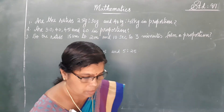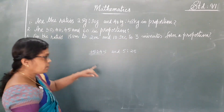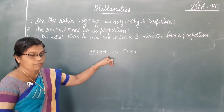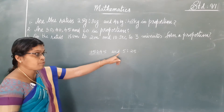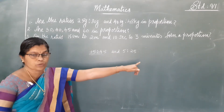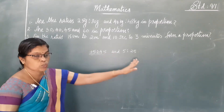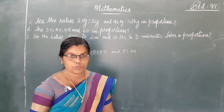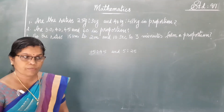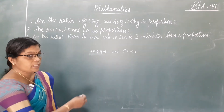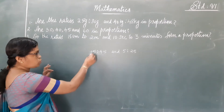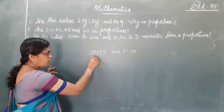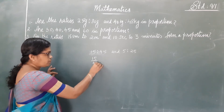For example, here 15 is to 45 and 5 is to 25. Whether these two ratios are in proportion, we have to check. So, what we have to do — find the ratio of these two quantities, that is 15 by 45.